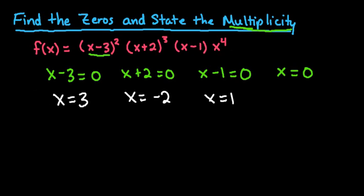And then to state the multiplicity, we're going to go through each one. So our zeros are 3, negative 2, 1, and 0.